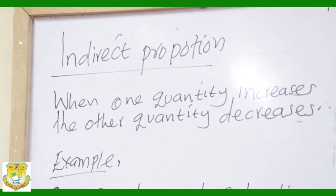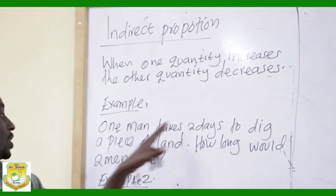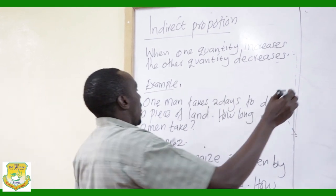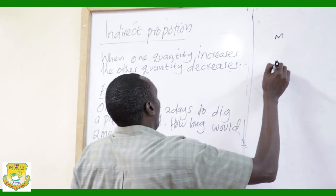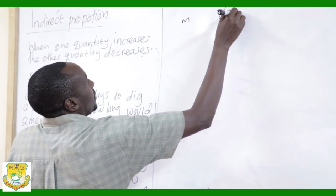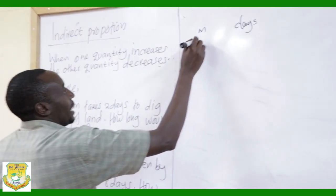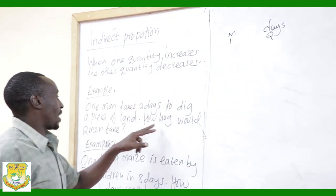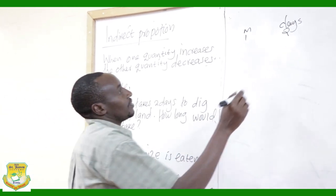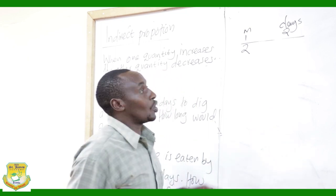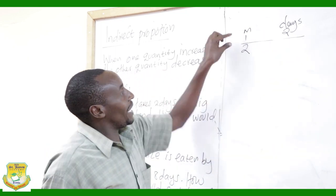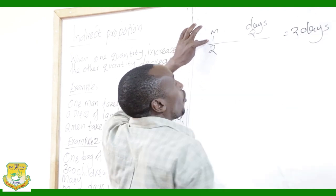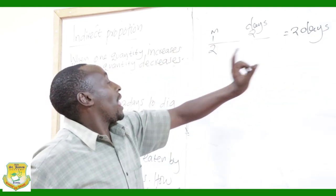Example 1: One man takes two days to dig a piece of land. How long would two men take? We write men on one side and days on the other. One man takes two days to dig a piece of land. We give this work to one person first — one man will take one times two days.